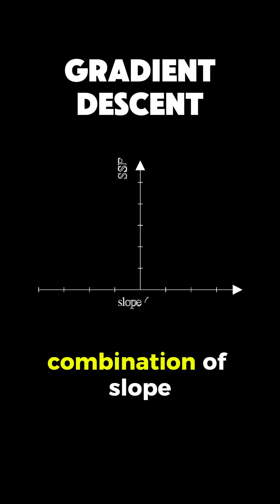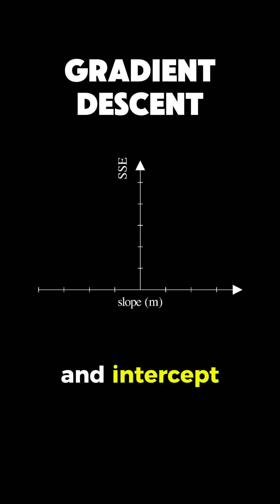Imagine this as a landscape where every possible combination of slope and intercept has a corresponding error value, creating a valley-like surface. Our job is to find the bottom of this valley where the error is smallest.